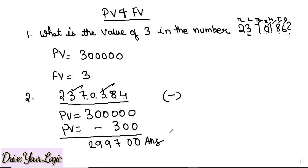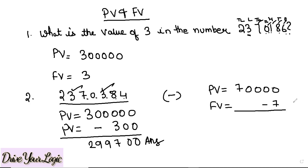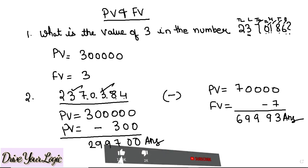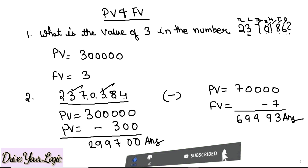There can also be questions like: find the place value of 7 and the face value of 7, and then find the difference. In the same number, the place value of 7 — write 7 and count four digits after it — so it is 70,000. The face value of 7 is simply 7. Now find the difference: 70,000 minus 7 equals 69,993. That is your answer. In this way we find all types of place value and face value sums.